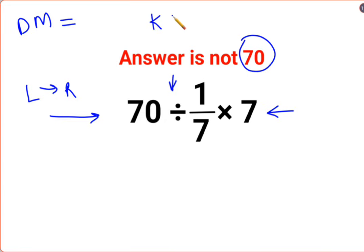Now whenever there is a fraction involved we will follow the acronym KCF, where K stands for keeping the first number as it is, C stands for changing the division sign to multiplication, F stands for flipping or taking reciprocal of 1 upon 7 which is 7 multiplied by 7.